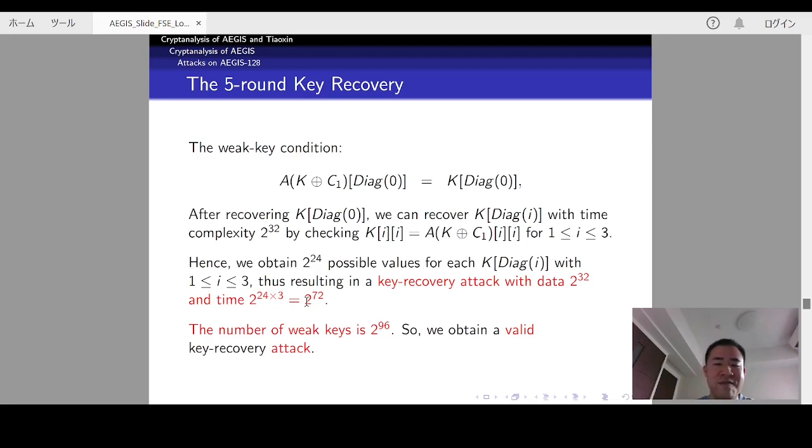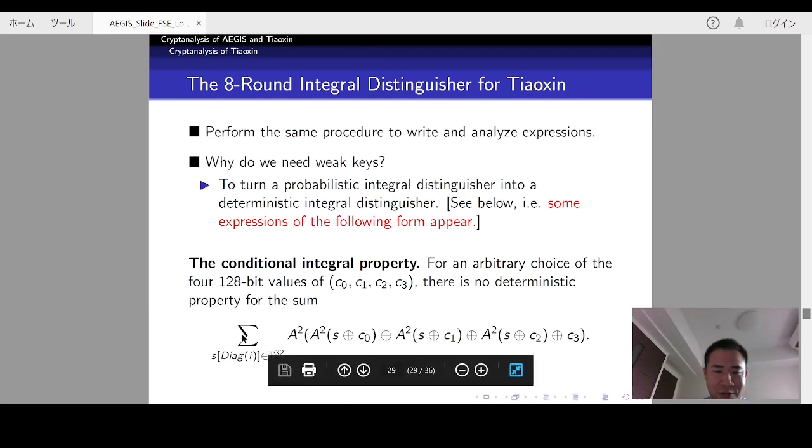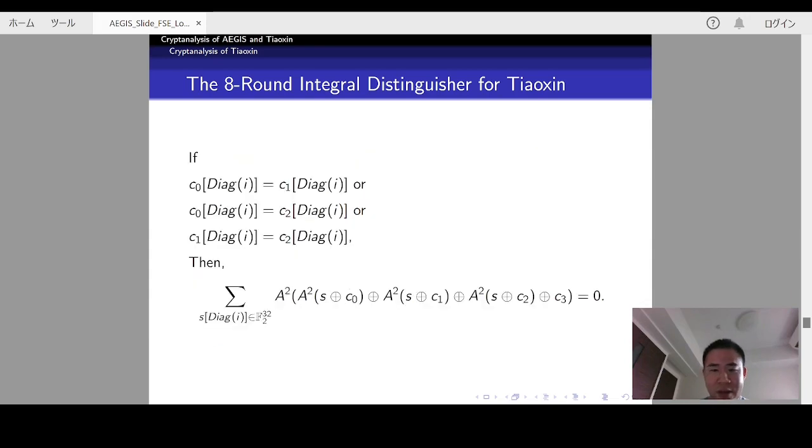Due to time limit, I will only describe the main problems we met when constructing the 8-round integral distinguisher for Tiaoxin. The role of the weak keys in Tiaoxin is to turn a probabilistic integral distinguisher into a deterministic integral distinguisher. Specifically, for an arbitrary choice of four constants c0, c1, c2, c3, there will be no deterministic integral property for this one.